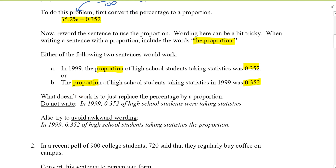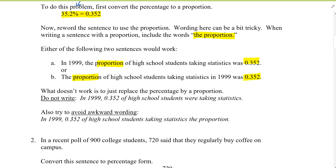One of the most common mistakes I see is writing: 'In 1999, 0.352 of high school students were taking statistics.' What does '0.352 of students' mean? Students are counted as whole numbers — one student, two students, three students. We don't say 0.352 students. So when you have a proportion, include the word 'proportion.'